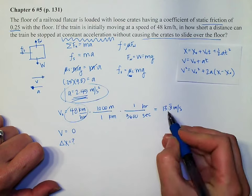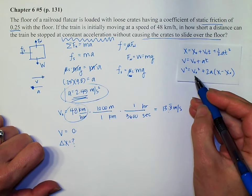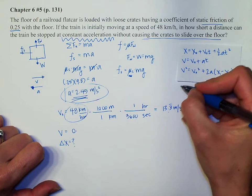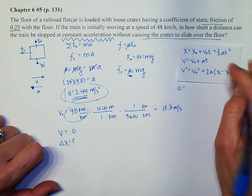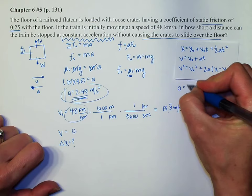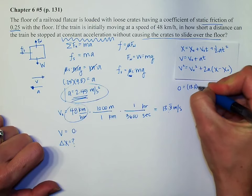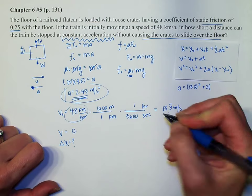So I have acceleration, initial velocity, final velocity. I want to do this. So I will use this equation and just plug it in right below. So zero equals 13.3 squared plus two times my acceleration.